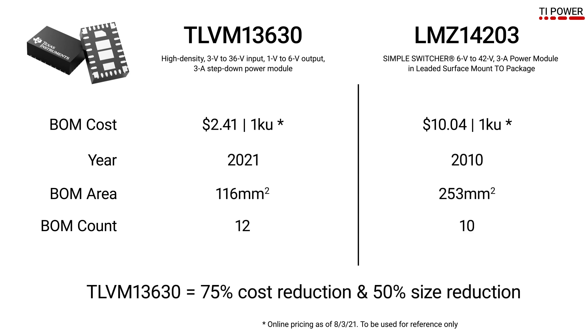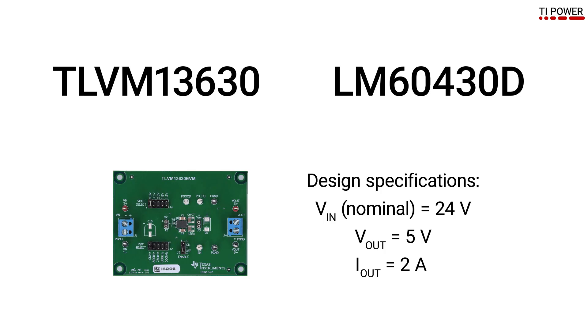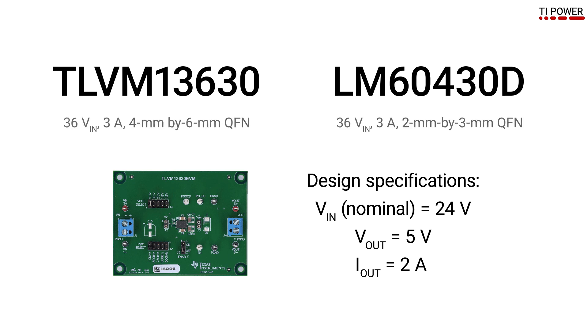The total solution size of the TLVM13630 is also significantly smaller. Let's take a look at how the same TLVM13630 buck module compares to a parametrically similar converter for a 24V input, 5V output, 10W design. This is a pretty typical requirement for many industrial applications. The LM60430D buck converter was selected for the comparison since it is the smallest package 36V 3A converter in the portfolio, and it switches at a similar frequency of about 1MHz.